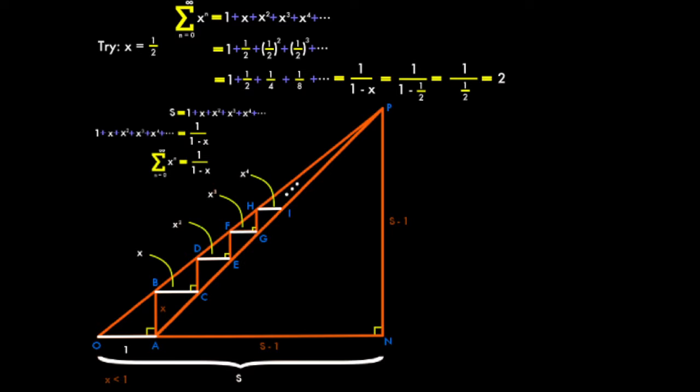Let's try plugging in a value for X. So X is less than 1, let's try X equals 1 half. So the sum of all these horizontal pieces would be 1 plus 1 half plus 1 half squared plus 1 half cubed, which is 1 plus 1 half plus 1 fourth plus 1 eighth and on and on and on. But we can just write the whole thing as 1 over 1 minus X, which is 1 over 1 minus 1 half, which is 1 over 1 half, so it's just the reciprocal, which is 2.